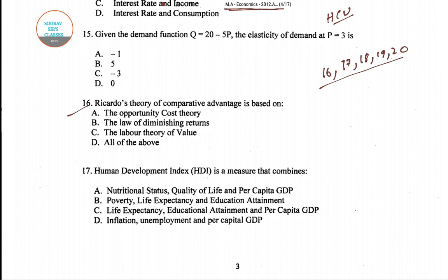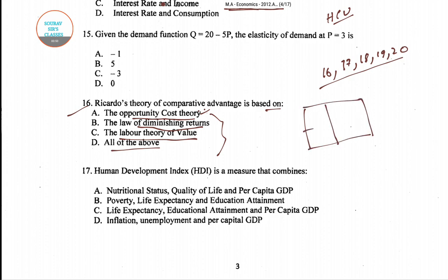We start with question number 16: Ricardo's theory of comparative advantage is based on — four options are given: the opportunity cost theory, the law of diminishing returns, the labor theory of value, and all of the above. We know the answer involves the opportunity cost theory.